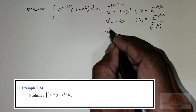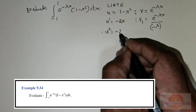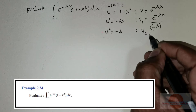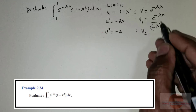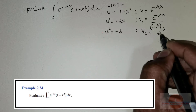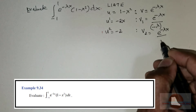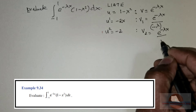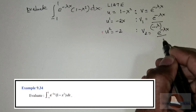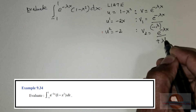Now u₂ is the differential of negative 2x, which is negative 2. And v₂, integrating e to the power negative lambda x again, gives us e to the power negative lambda x divided by lambda squared — since dividing by negative lambda again makes it positive lambda squared.